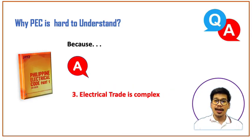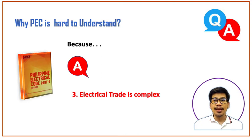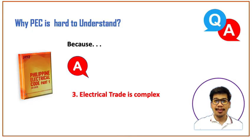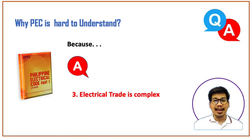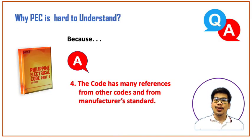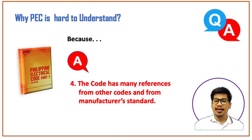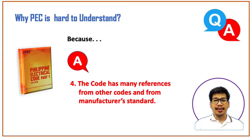The third reason why PEC is hard to understand is because the electrical trade is complex, and the reader needs to know what specific topic they want to look up in the PEC. If you check the table of contents of our PEC, you will see a lot of electrical-related topics, and some electrical practitioners are still not exposed to some of those in detail. The fourth reason is that the code has many references from other existing codes, manufacturer standards, and technical applications — which complicates the basic understanding of the Philippine Electrical Code.